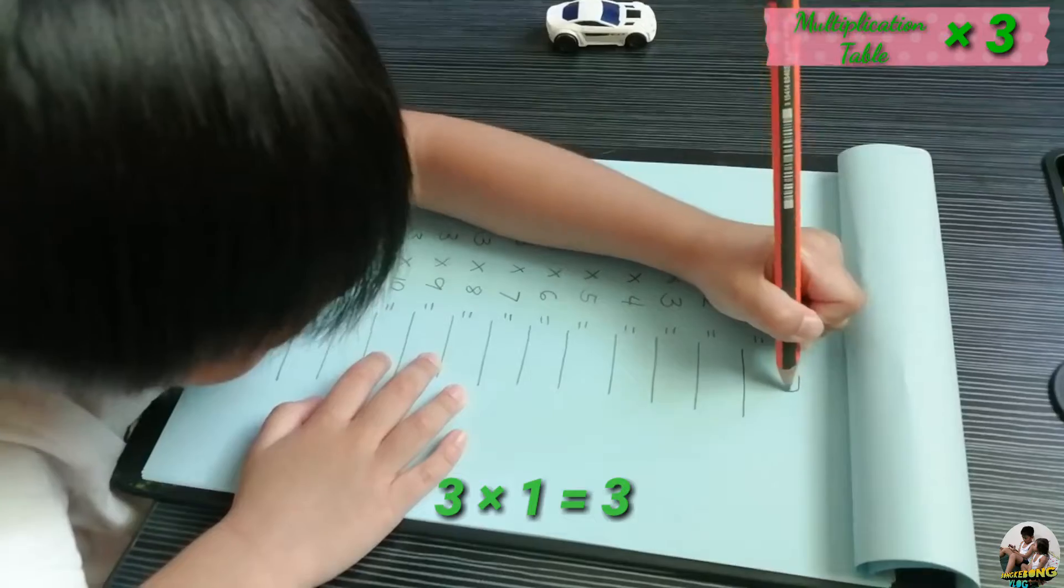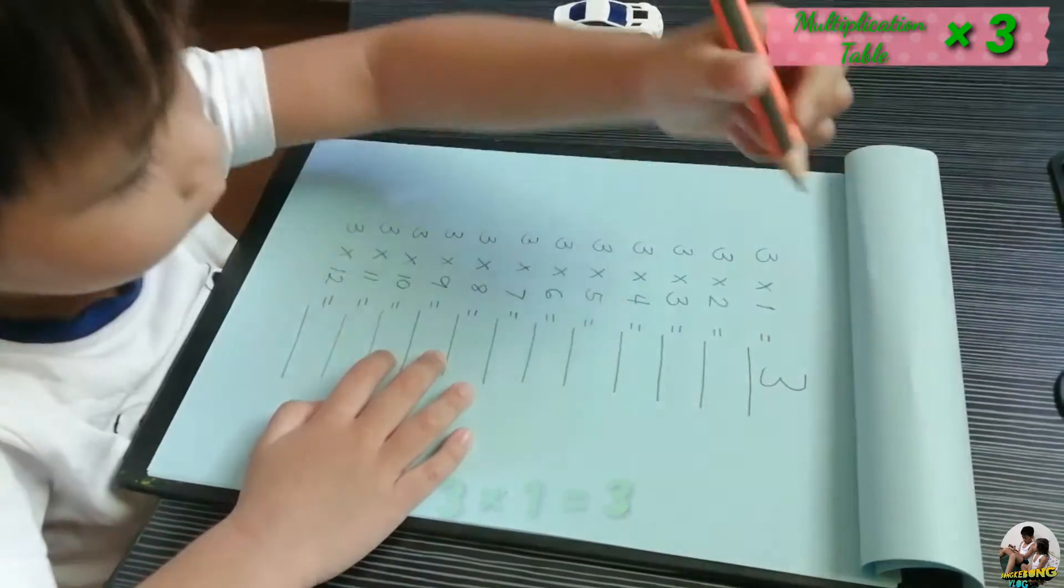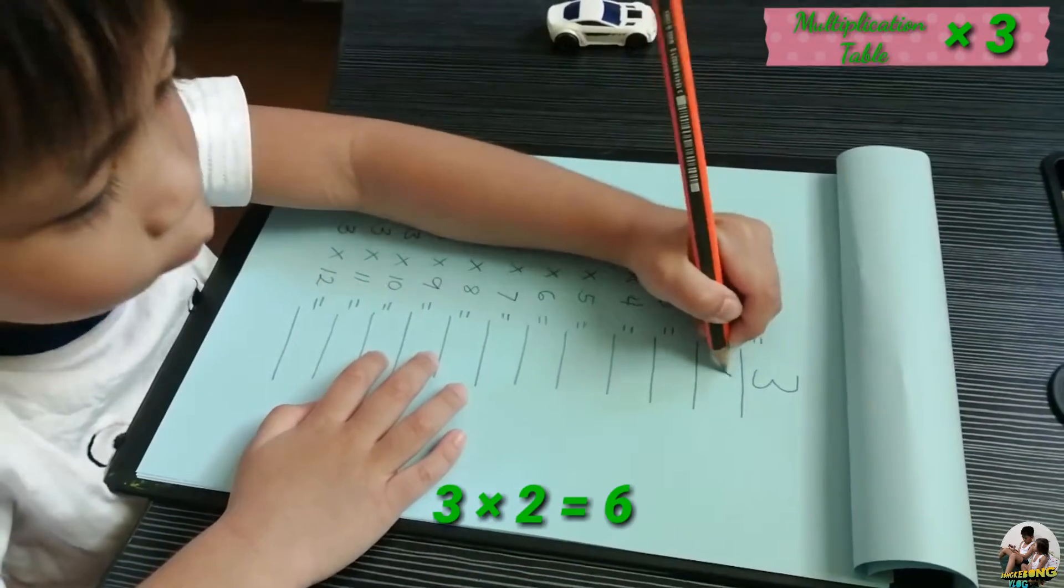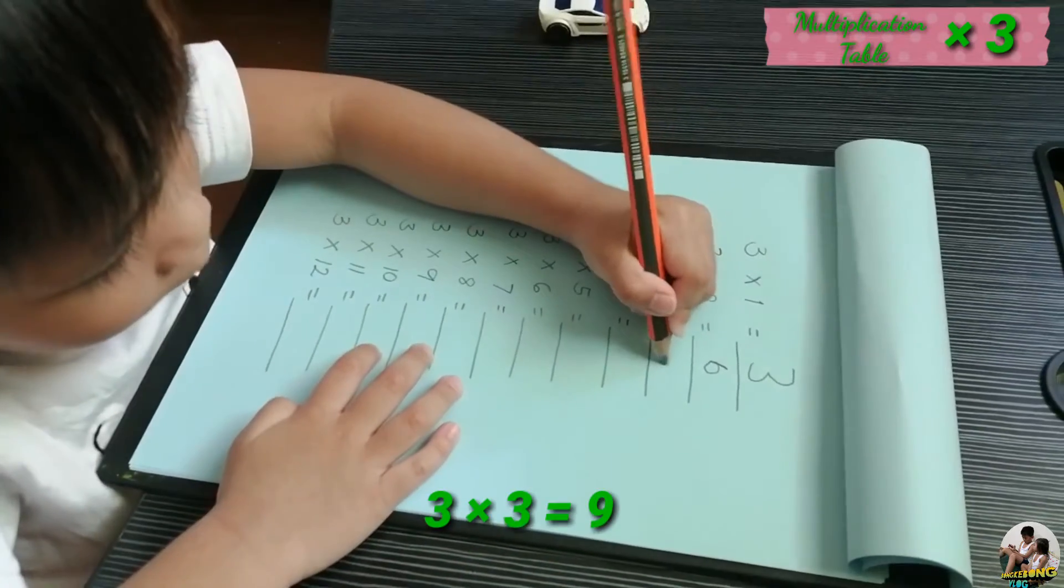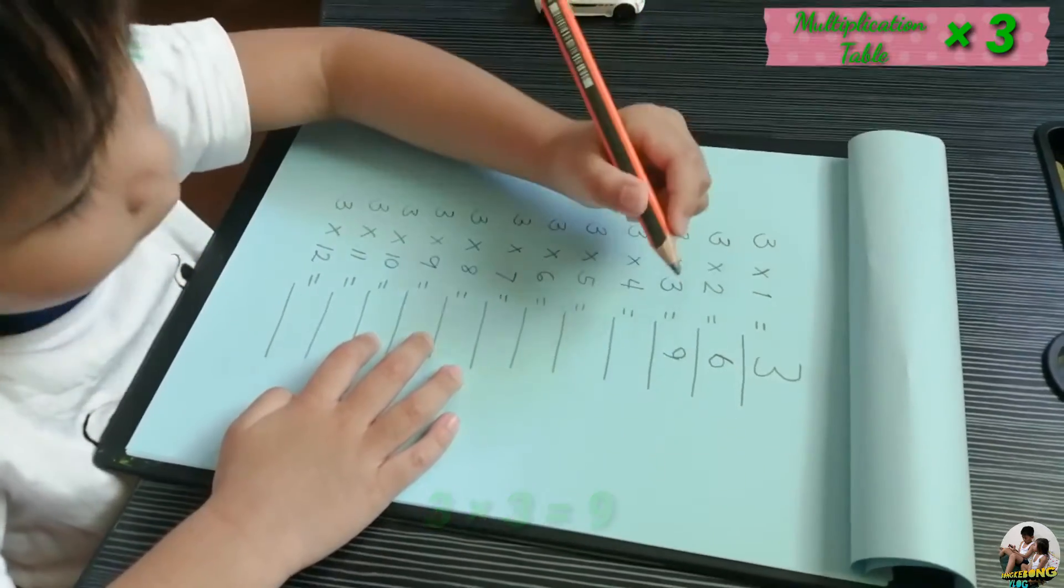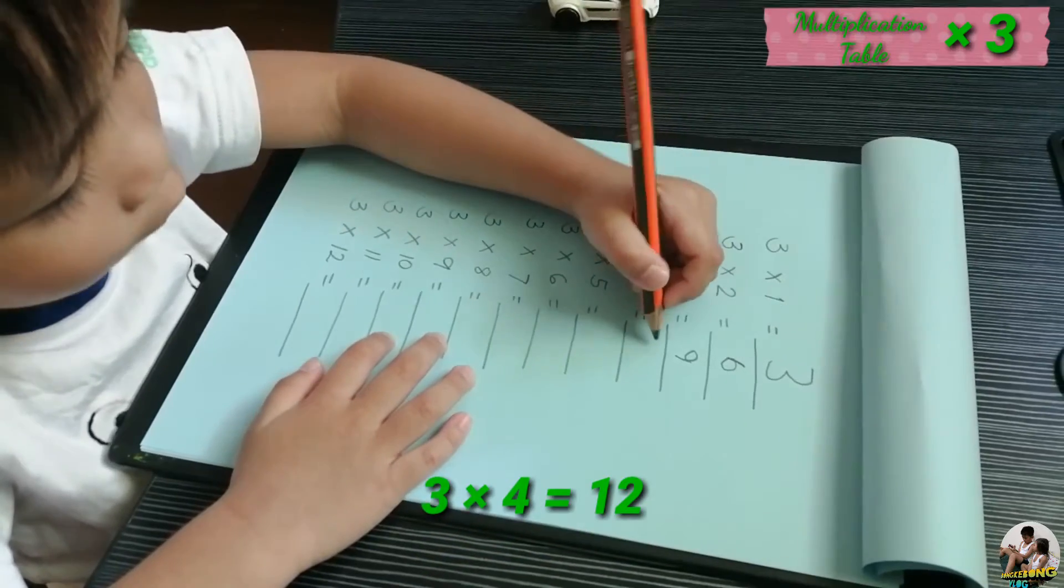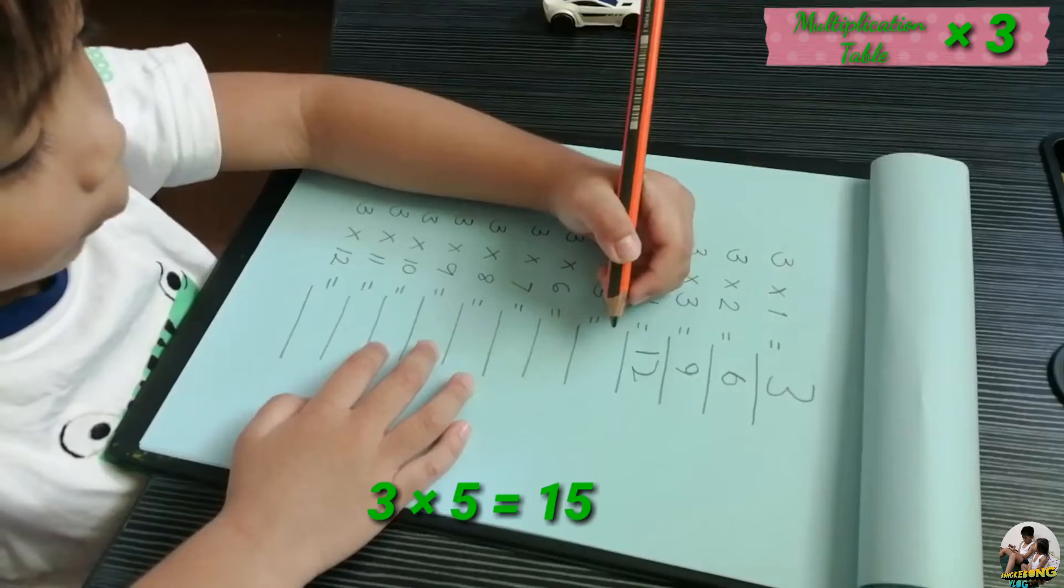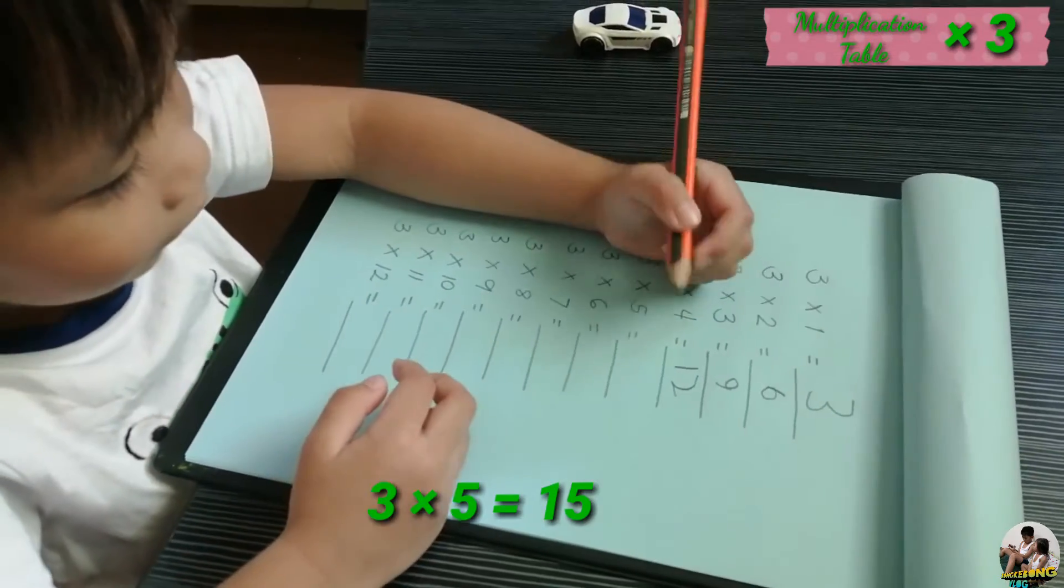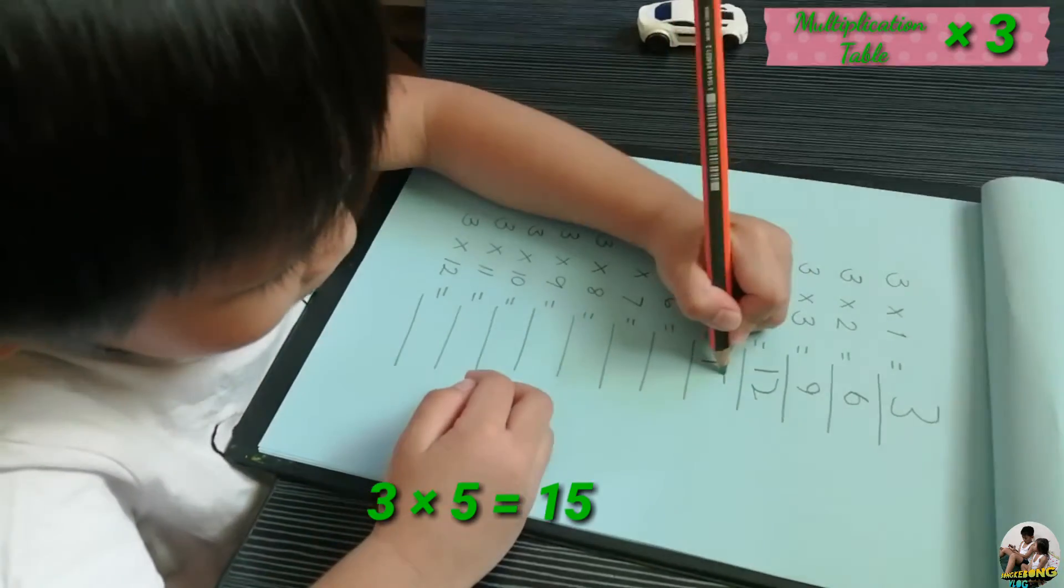Three times one equals three. Three times two equals six. Three times three equals nine. Three times four equals twelve. Three times five equals fifteen.